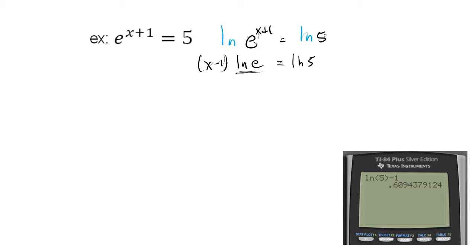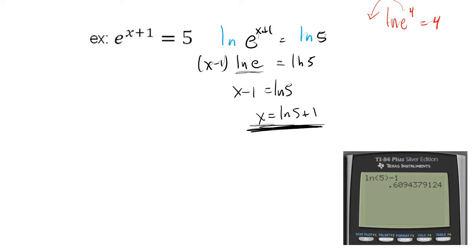Well, ln of e — that's log base e of e — so e to what power gives me e? The first power. So ln of e is just 1. We saw a similar example before where ln of e to the fourth is just 4, because the ln and e cancel each other out since ln of e is 1, applying the power rule for logarithms. So what we end up with is x minus 1 equals ln of 5, and x equals ln of 5 plus 1. This answer is exact; the decimal approximation is about 0.61, depending on what your teacher asks you to provide.